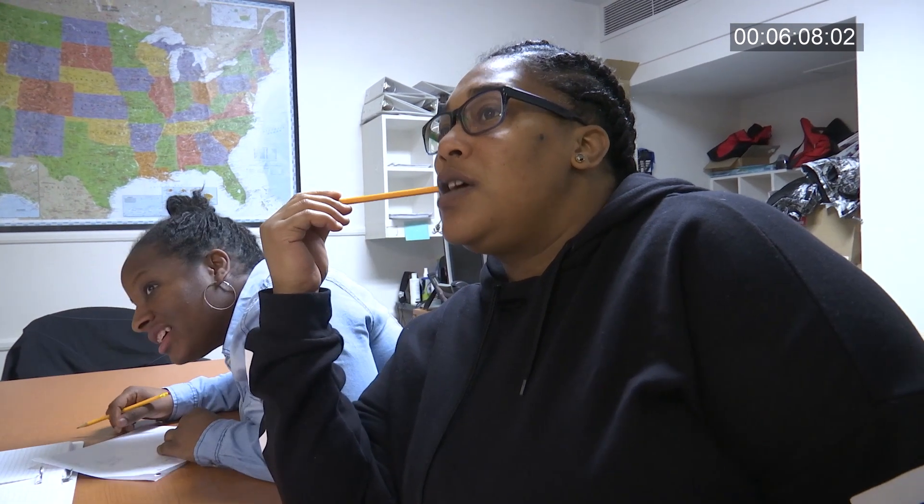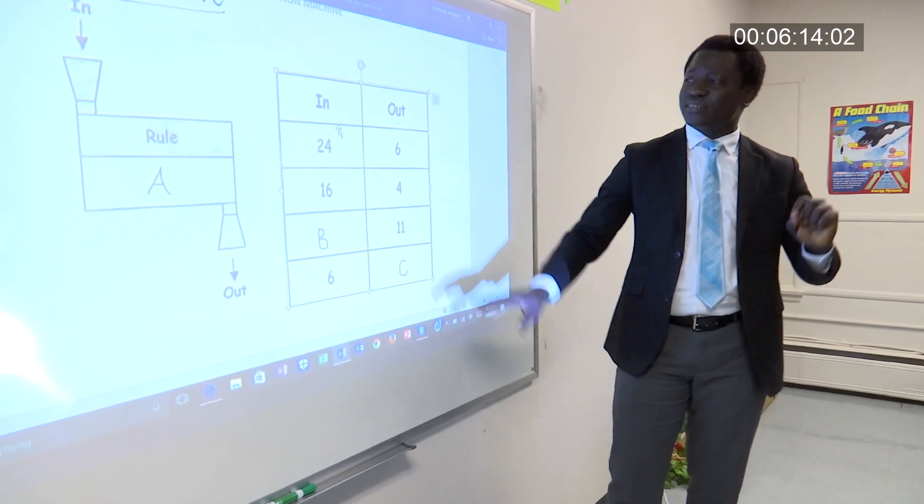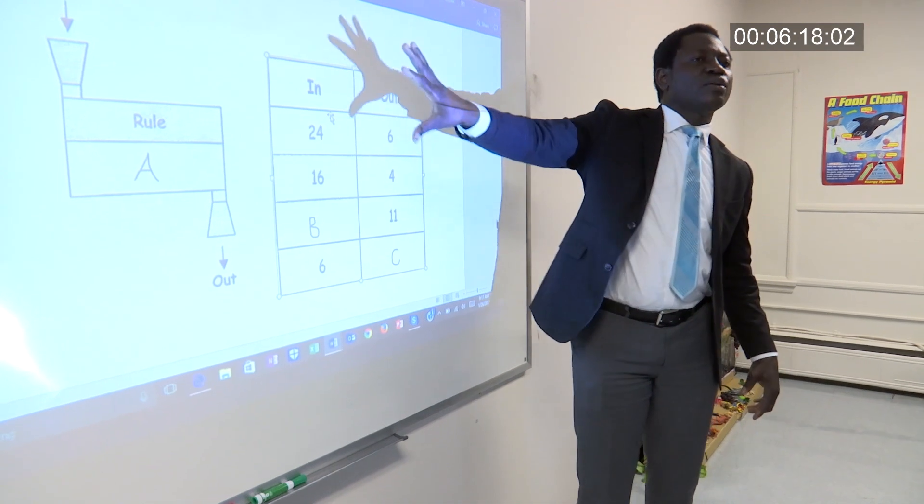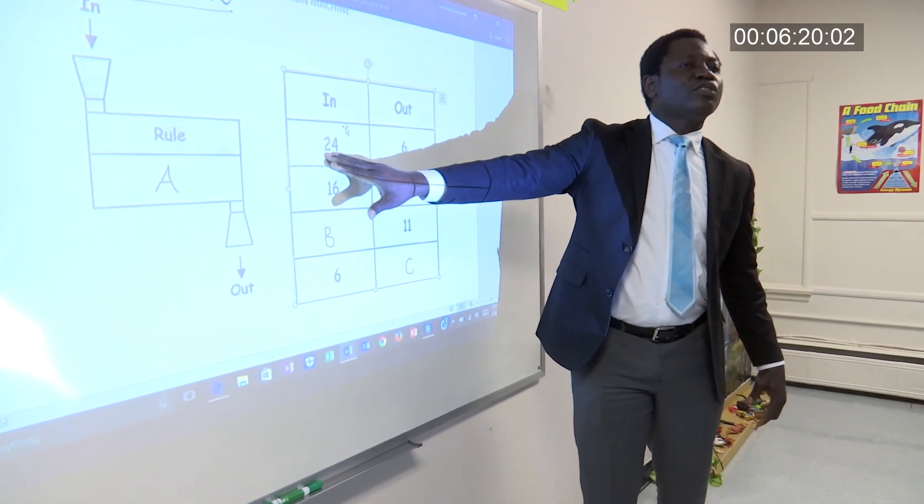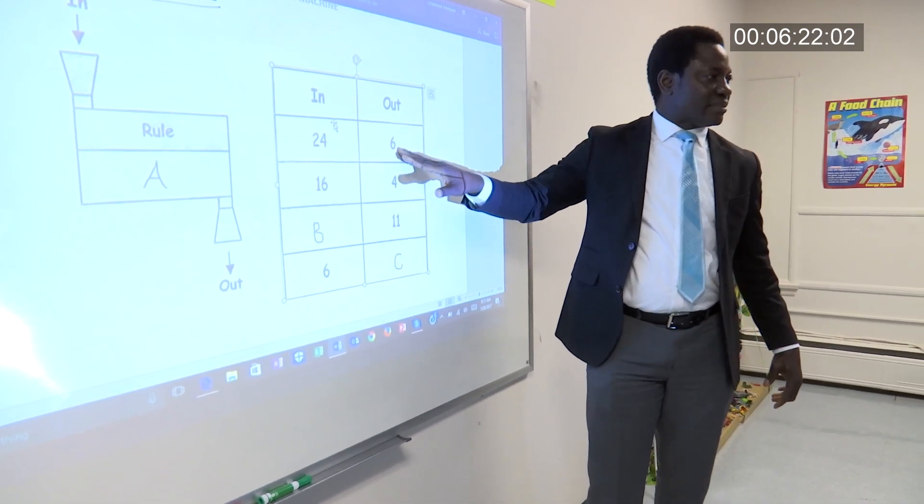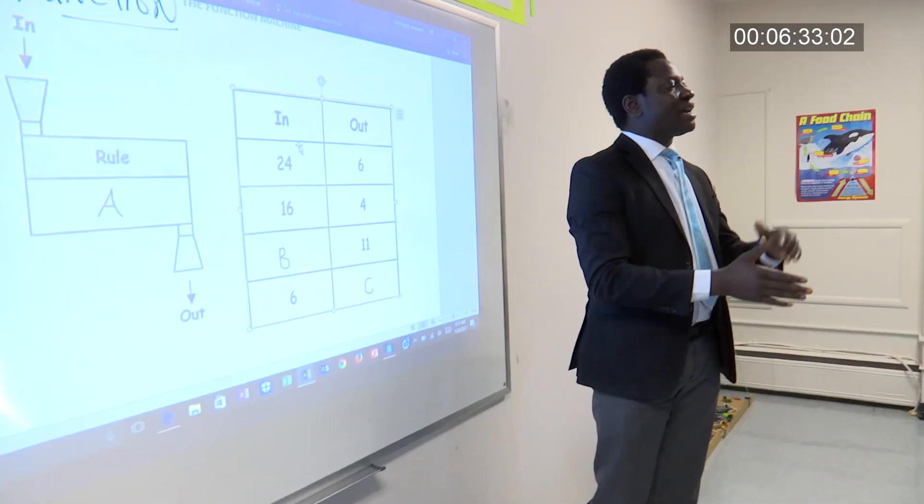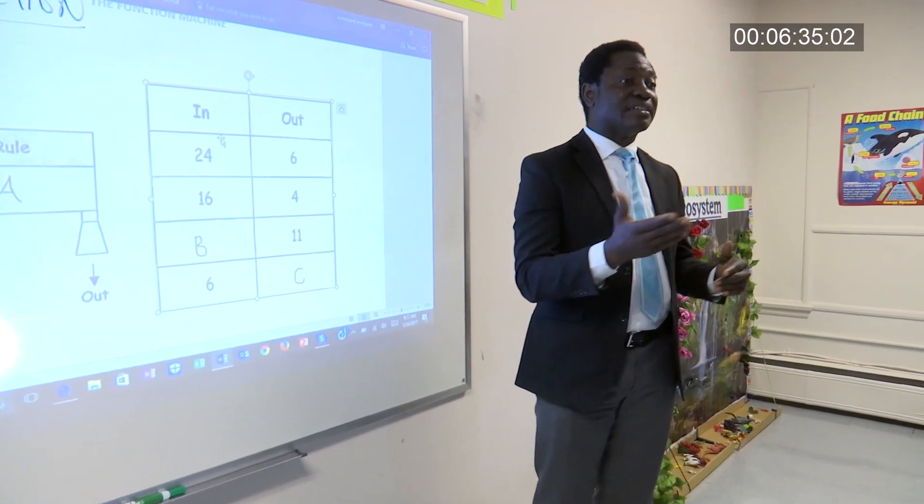You said they're decreasing, subtracting. You said multiplying. Why do you say multiplying? So, let's look at this. You put in 24, you get 6. This table, what do you think is happening to the number? Is it increasing or decreasing? Decreasing. It's decreasing. Good job. Decrease, can I have that be minus or division?